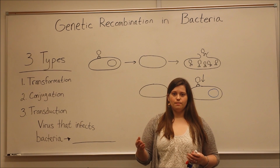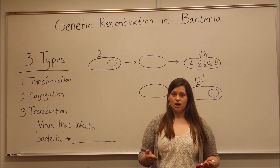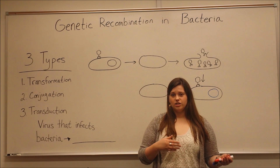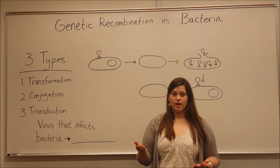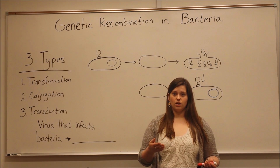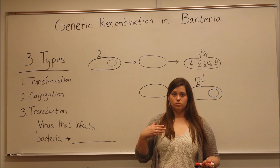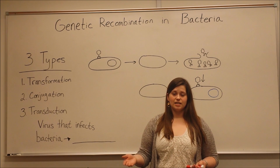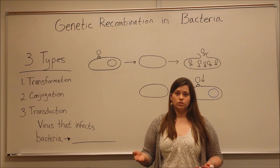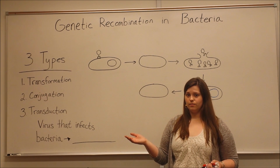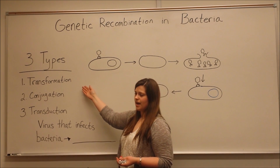For example, they might acquire the genes that allow them to be resistant to some form of antibiotic. They might also pick up genes for toxins or virulence factors — for example, a gene that encodes for a toxin that allows it to cause bad disease in its host, or something that allows it to infect its host with more ease. These are all things that a bacteria cell can acquire to give it new functions.